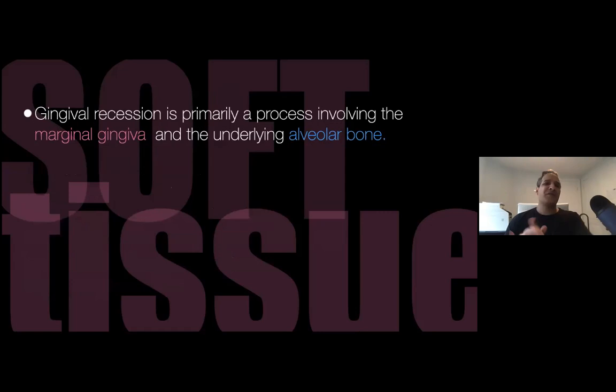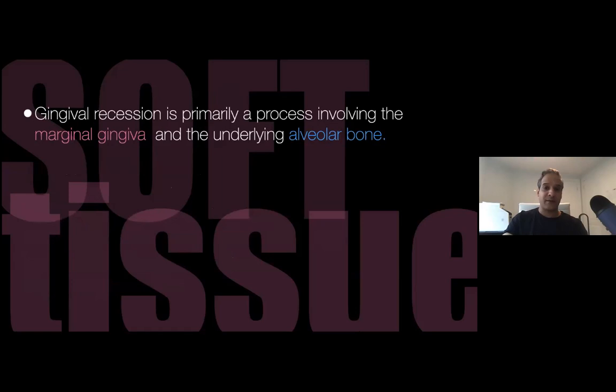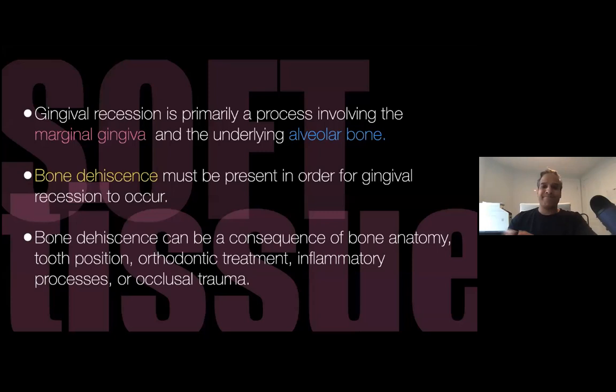When we see gingival recession clinically, we notice the marginal gingiva has started to recede, exposing the root surface of the tooth — you never see the bone. But recession is affected by bone: what really happens is a bone dehiscence occurs first, and because of inflammation or other factors, the soft tissue follows the bone loss. Bone loss has to happen first before soft tissue recedes — you've never seen recession where you can still see the bone.